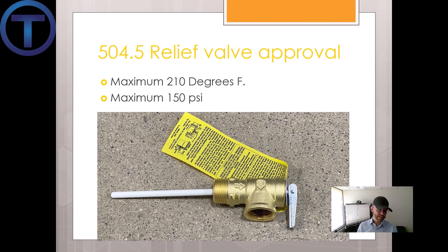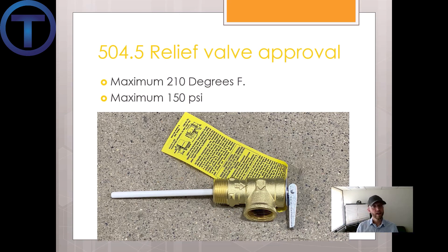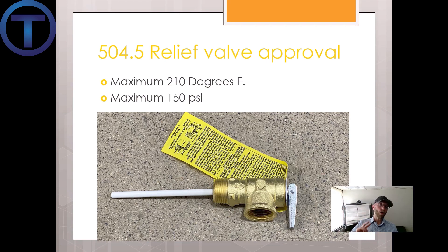504.5 states that a temperature pressure relief valve shall bear the label of the approved agency. There's that label that's always hanging on there — leave it, it's supposed to be there. It should also have a maximum temperature of 210 degrees Fahrenheit — only two degrees below the boiling point of 212 — and a maximum of 150 PSI.